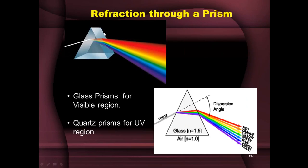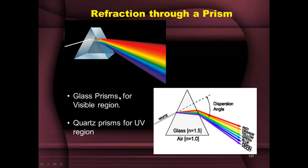Here you can see a pictorial representation. Shorter wavelengths are refracted more — you can see all the visible colors, with red being the longer wavelength showing less deviation, and shorter wavelengths showing more. You also see two refractions — one at the first surface and another at the second surface — which helps resolve different wavelengths in a prism. But longer wavelengths are not as well resolved as shorter ones. The prism must not absorb the radiation, so it should be made of a material transparent to the radiation being used. Glass prisms are used for the visible region, and quartz prisms for UV.